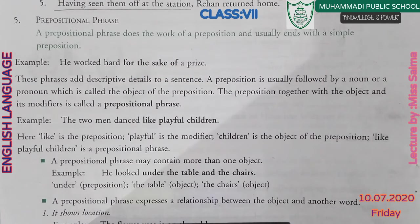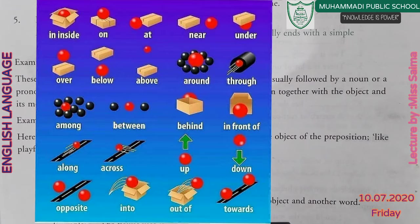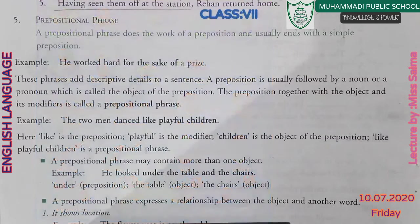Other examples of prepositions are: on, at, near, under, below, above, around, through, among, between, behind, in front of, across, up, down, into, out of, towards. These are all prepositions.